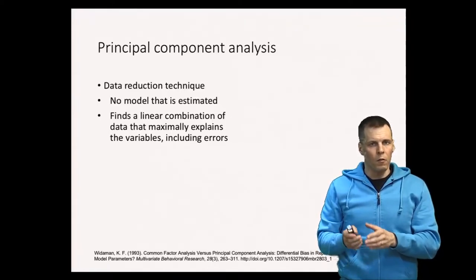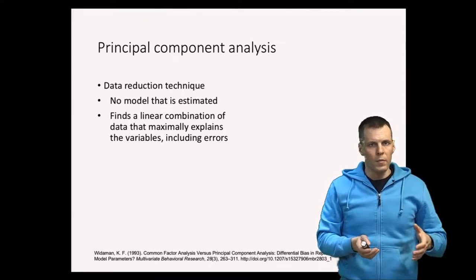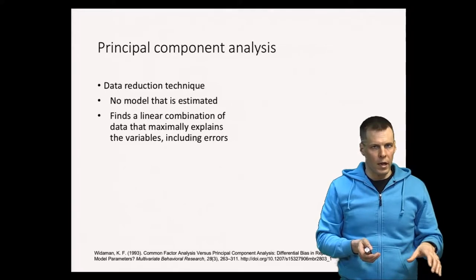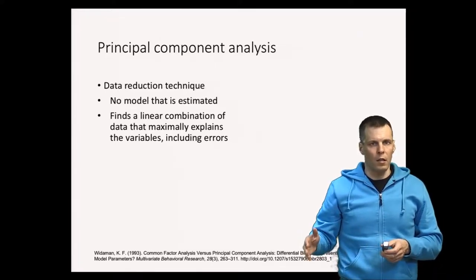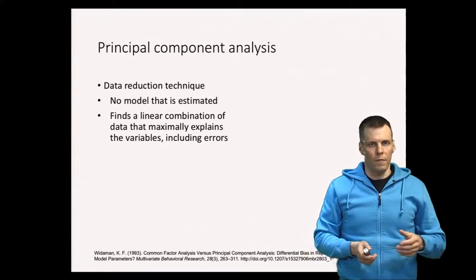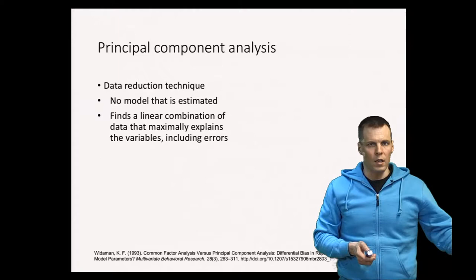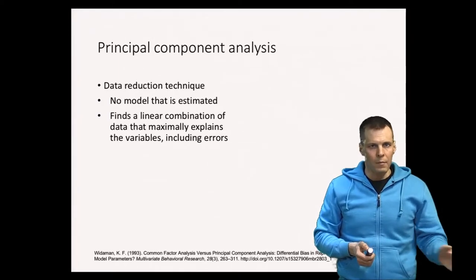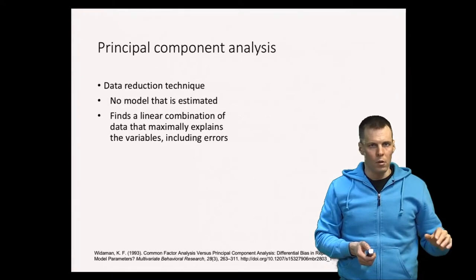In factor analysis only the common variance is considered. What that means is that principal component analysis also tries to explain the unreliability of the indicators, whereas in a factor analysis we try to take the unreliability and other unique aspects of the indicators and eliminate those so that we can extract what is common between the indicators.